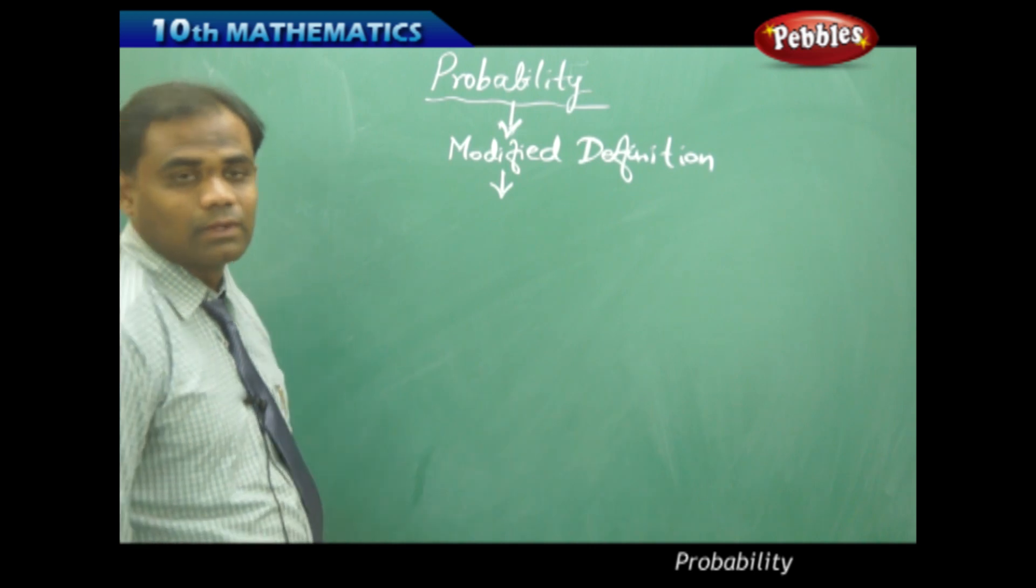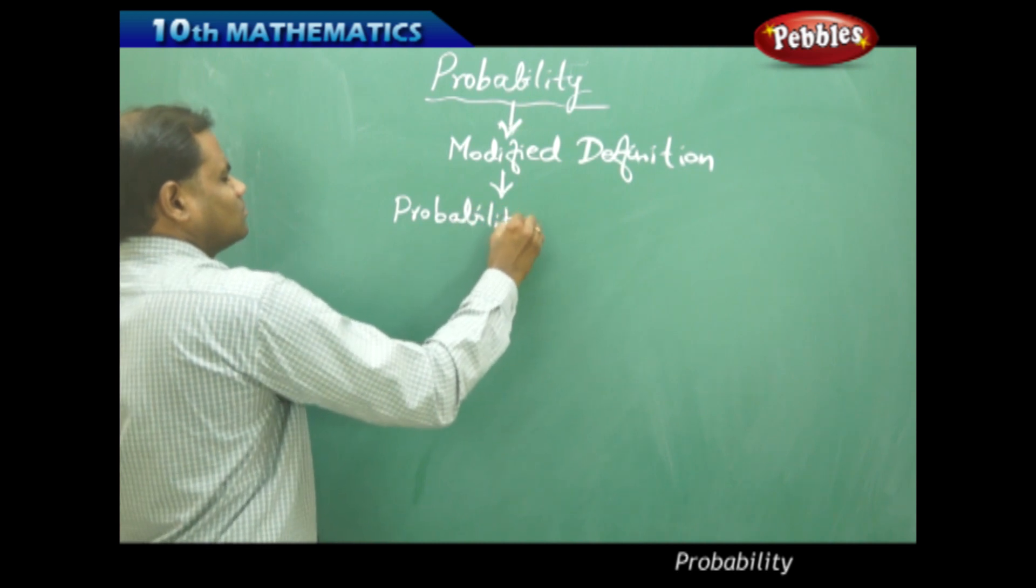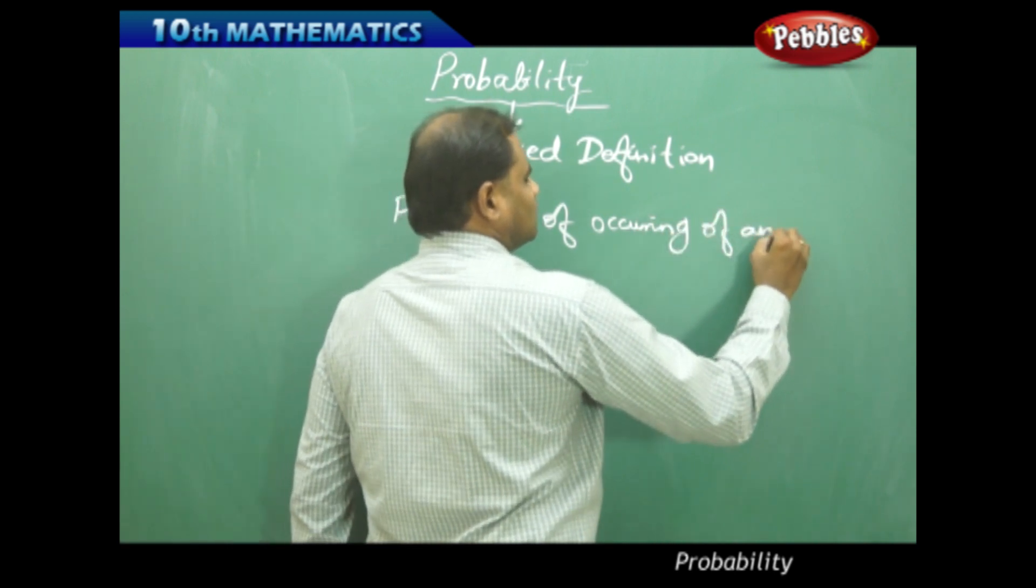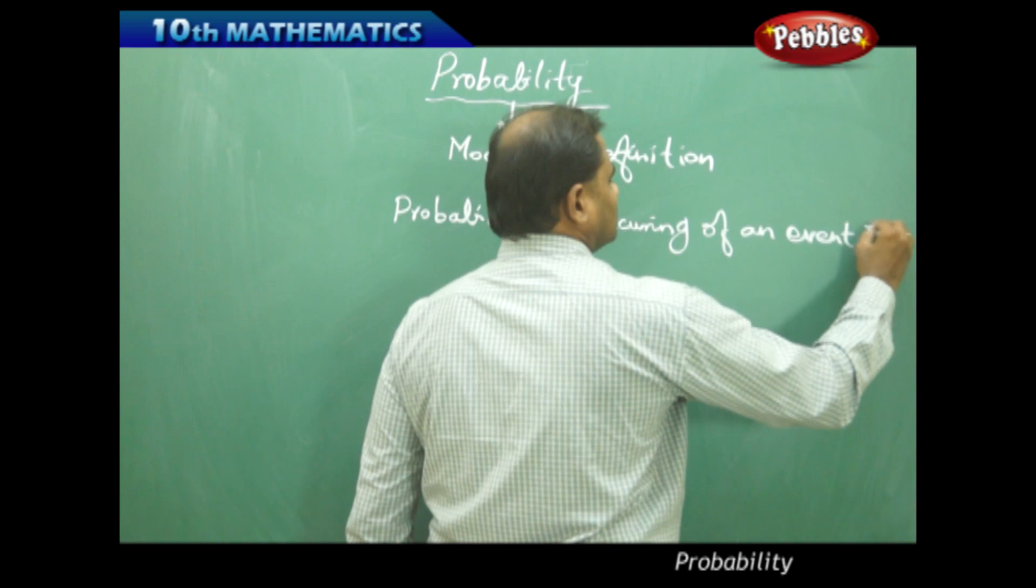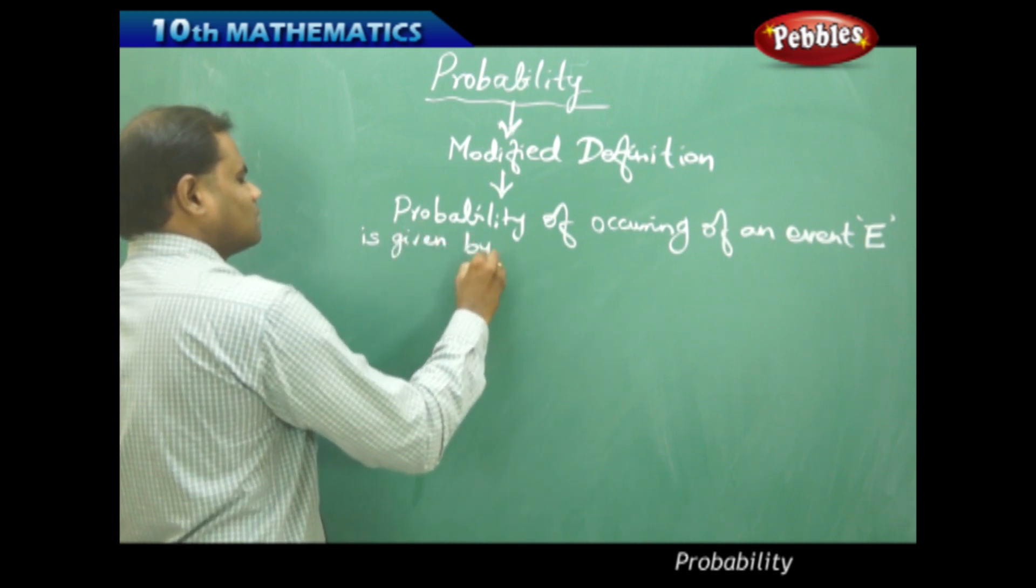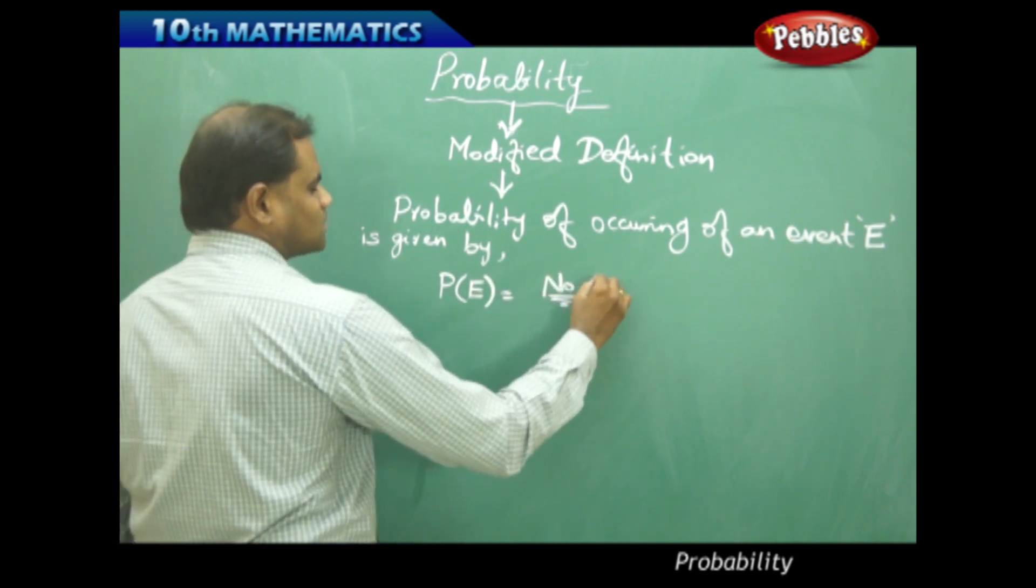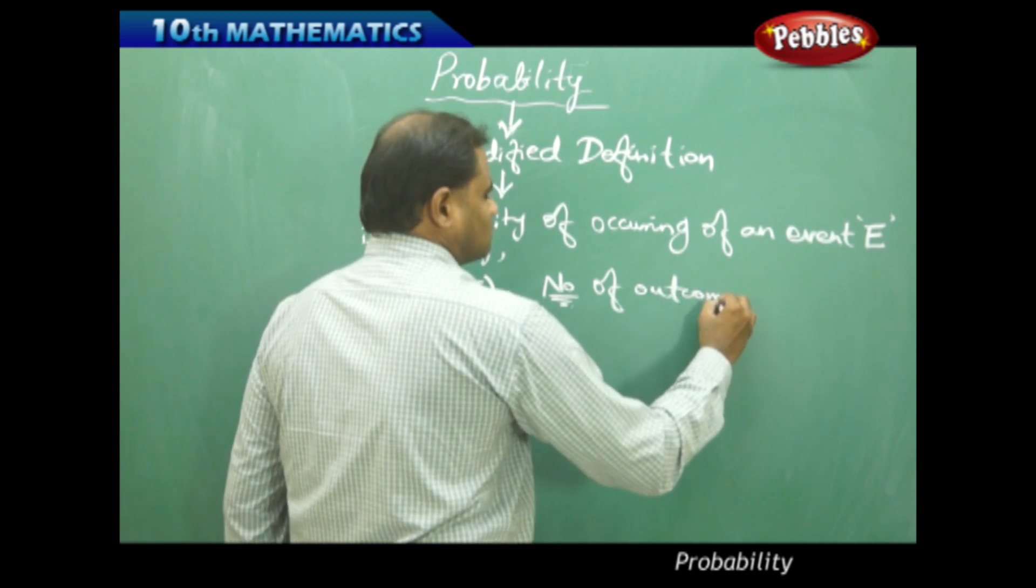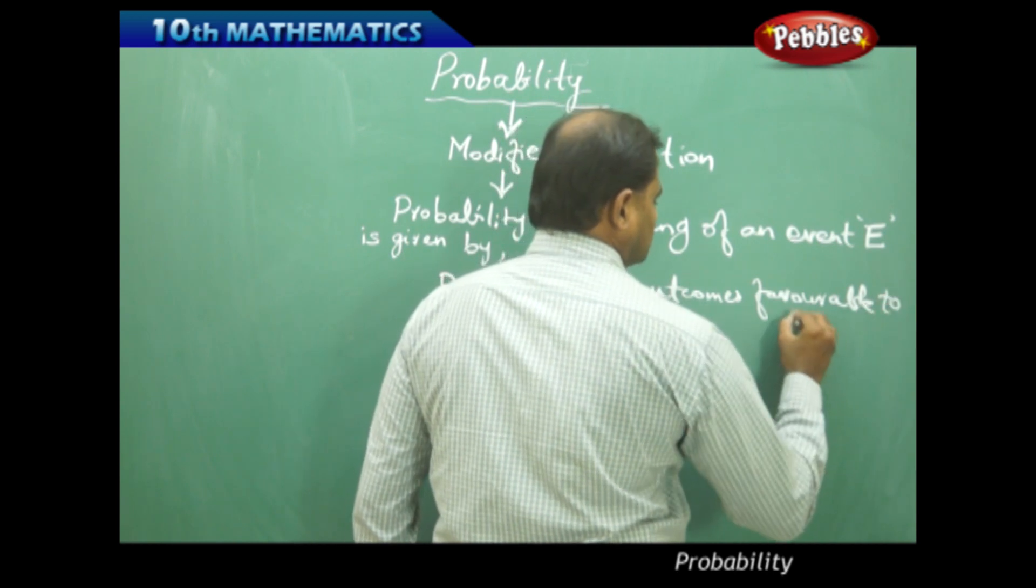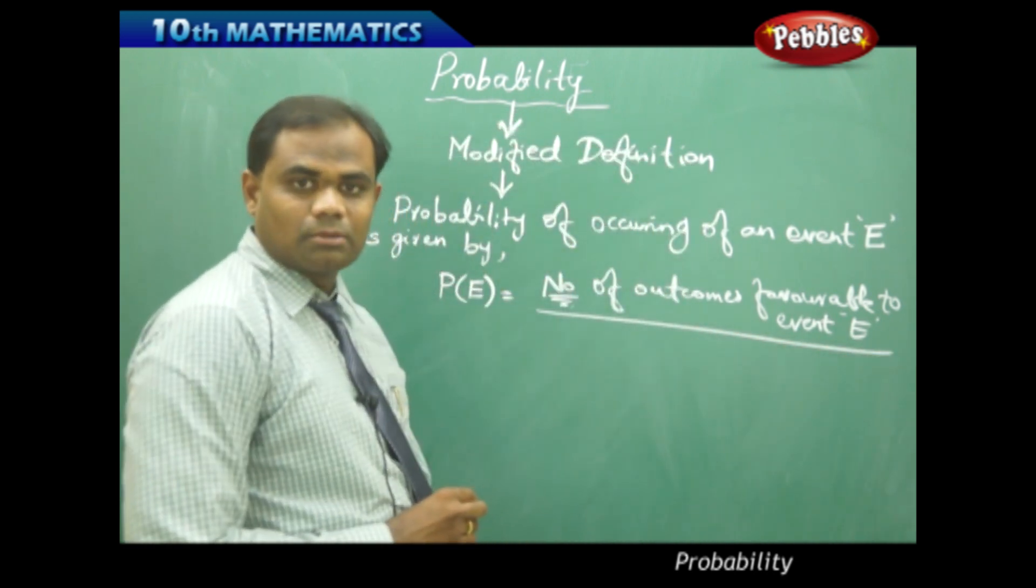The probability of occurring of an event E, denoted by P(E), is the number of outcomes favorable to event E divided by the total number of possible outcomes.